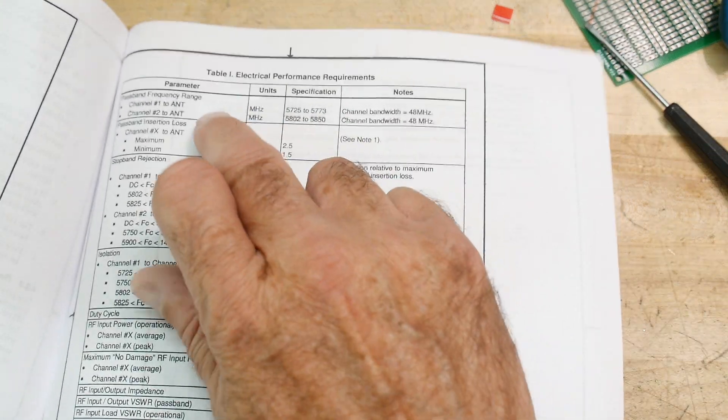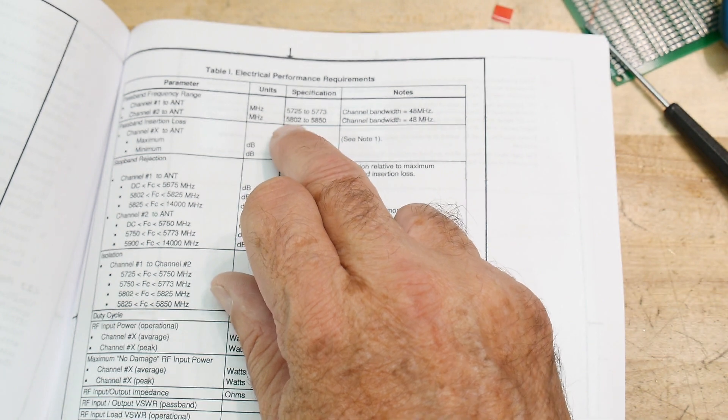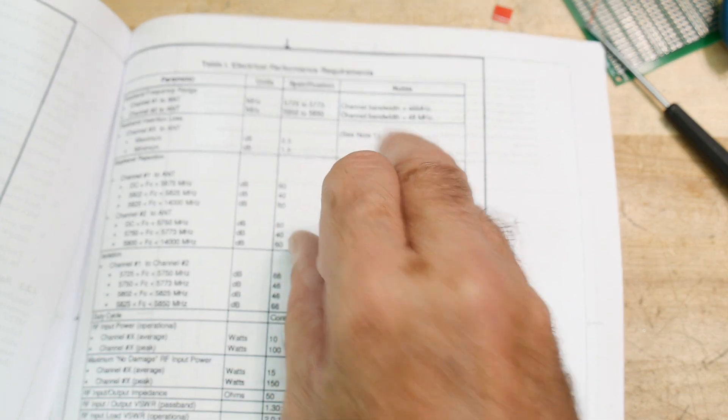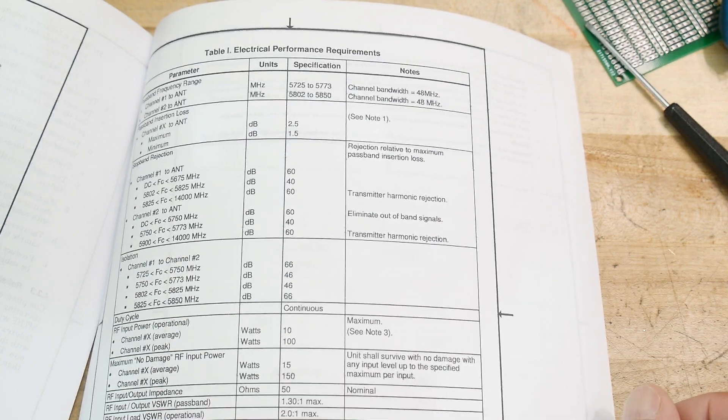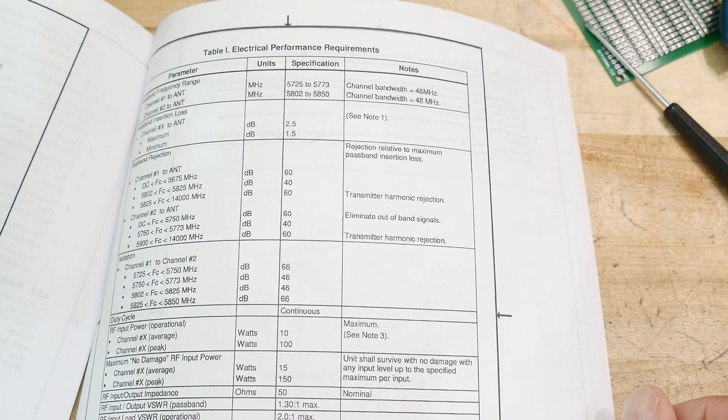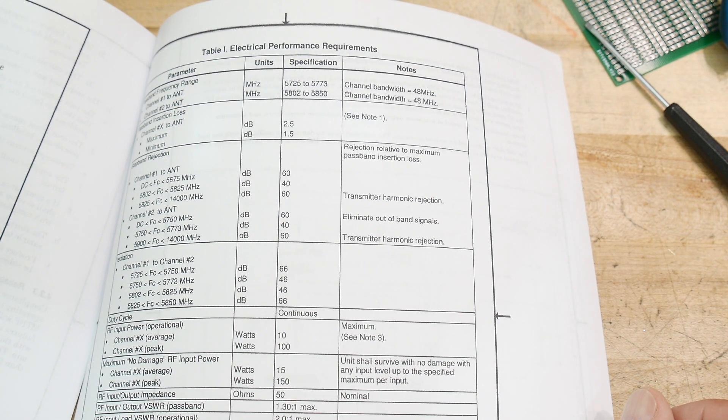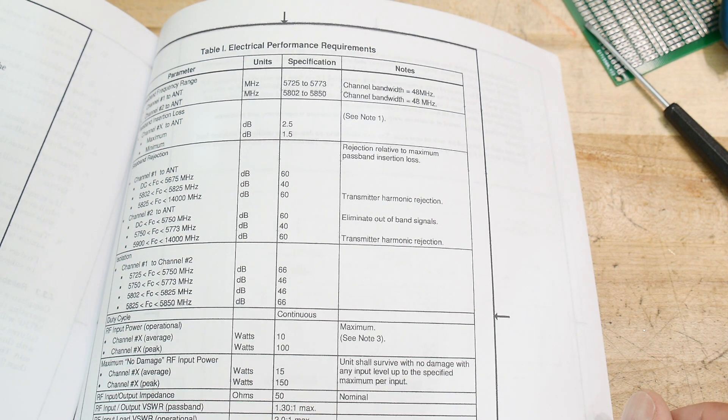So here we go. Frequencies are channel 1 is 5.7 and channel 2 is 5.8, and they're 48 megahertz bandwidth, so that's pretty narrow for that high frequency. Insertion loss 2 dB, stop channel 40 to 60 dB isolation.